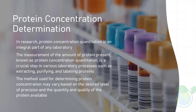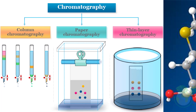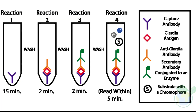Protein Concentration Determination. In research, protein concentration quantitation is an integral part of any laboratory. The measurement of the amount of protein present is a crucial step in various laboratory processes such as extracting, purifying, and labeling proteins. This step is often required before further processing the protein samples for analysis using methods such as chromatography, electrophoresis, and immunochemistry. The method used for determining protein concentration may vary based on the desired level of precision and the quantity and quality of the protein available.